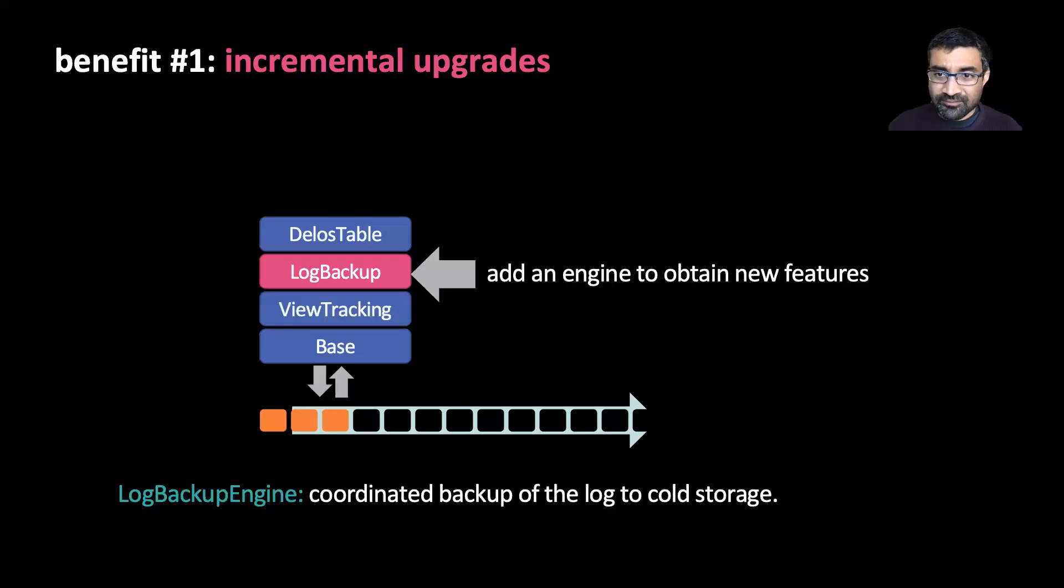After we deployed Delos table, one of our early customer requests was a point-in-time restore capability. Implementing this required backing up the log. To do this in an efficient manner, we deployed a log backup engine, which coordinates across nodes to efficiently backup the log. This is an example of how we added an engine to obtain a new feature in production.